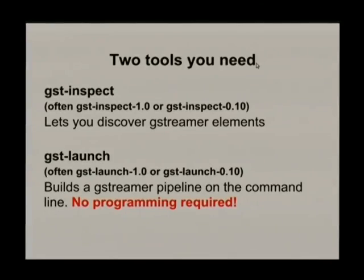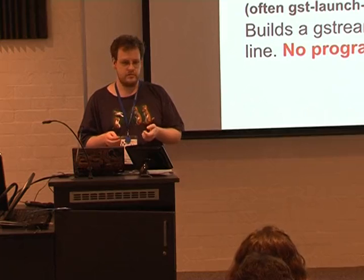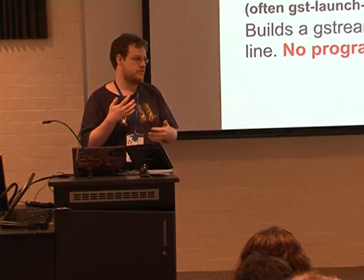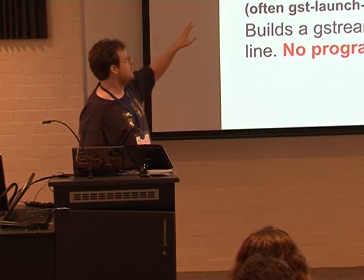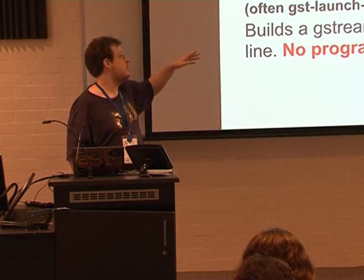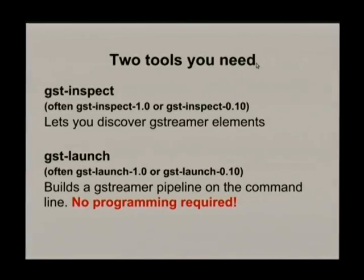The two tools we're going to be using today: one is called GST Inspect. GST stands for GStreamer — it's a lot easier to type GST than GStreamer on the front of everything, so that's what they're shortening them to. On most distros it's actually gst-inspect-0.10. If you're running Lucid, Precise, some Red Hat — although 1.0 has been released in the last six months, so some newer systems might have gst-inspect-1.0. The systems are compatible in that you can have both installed at once.